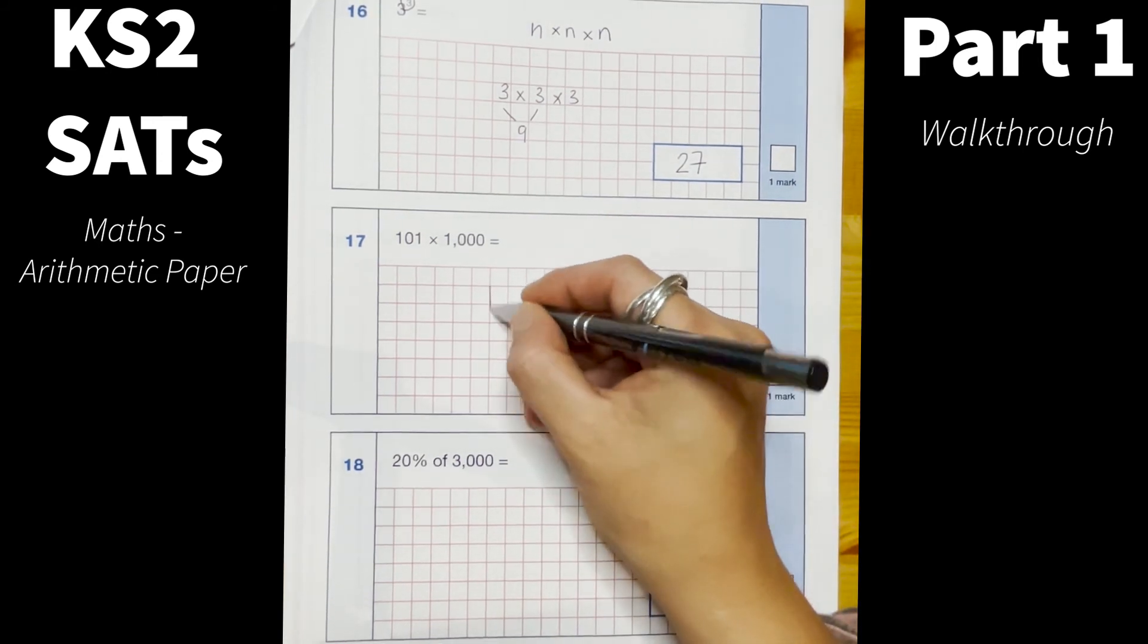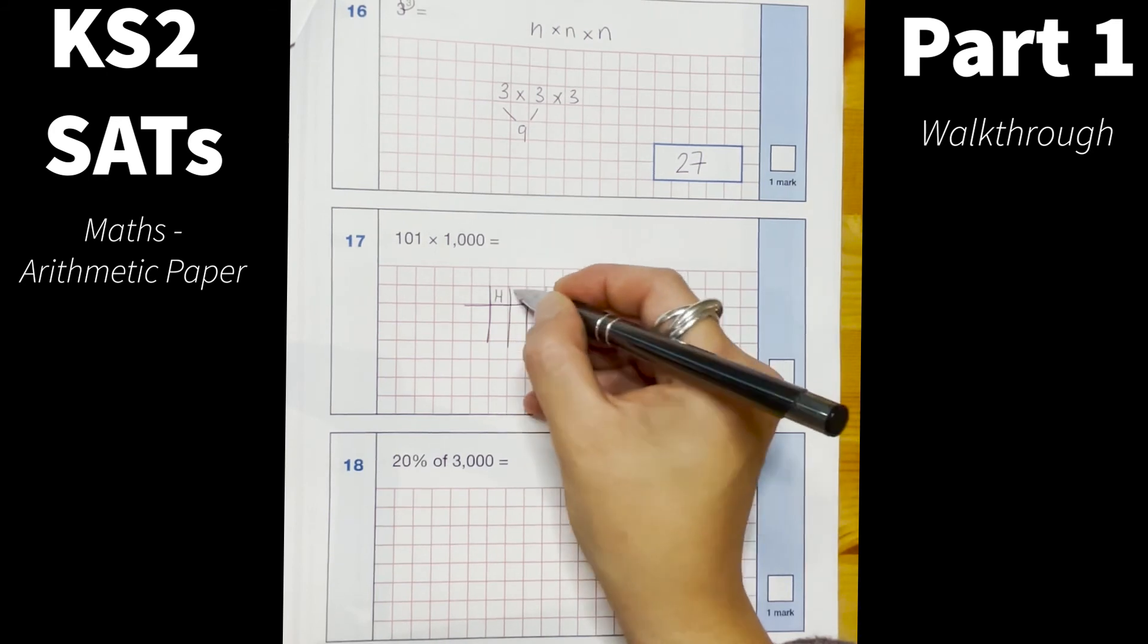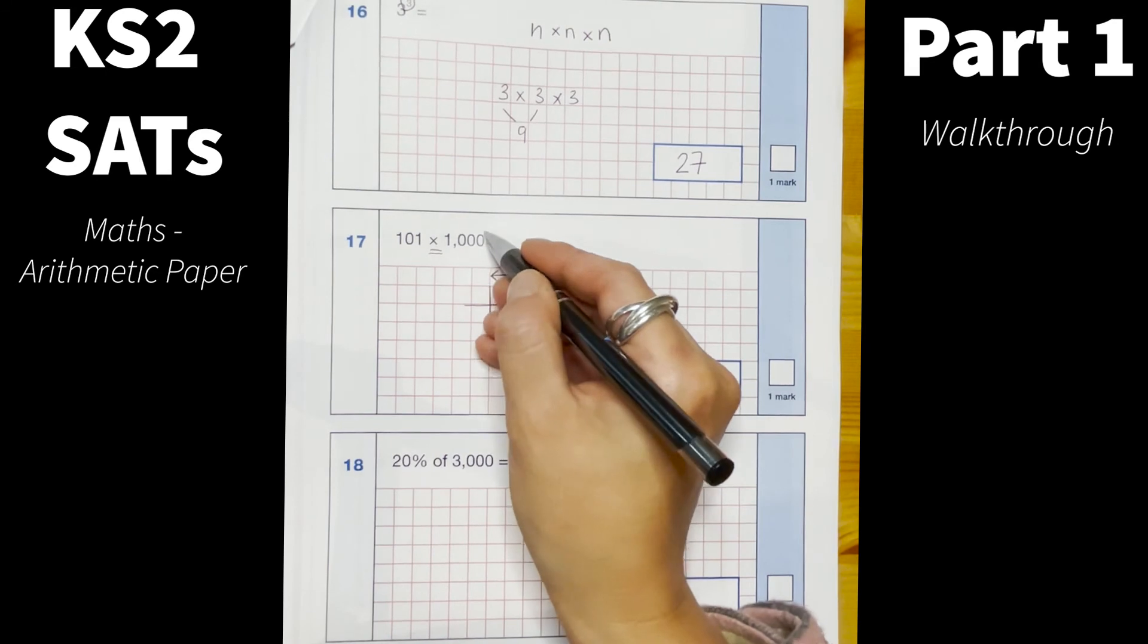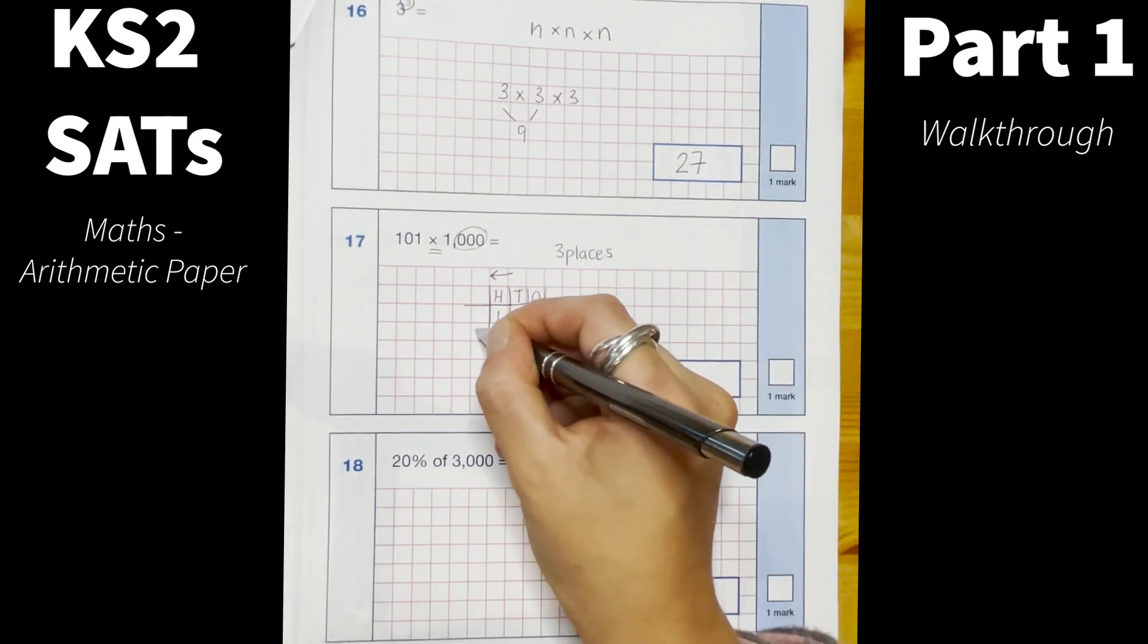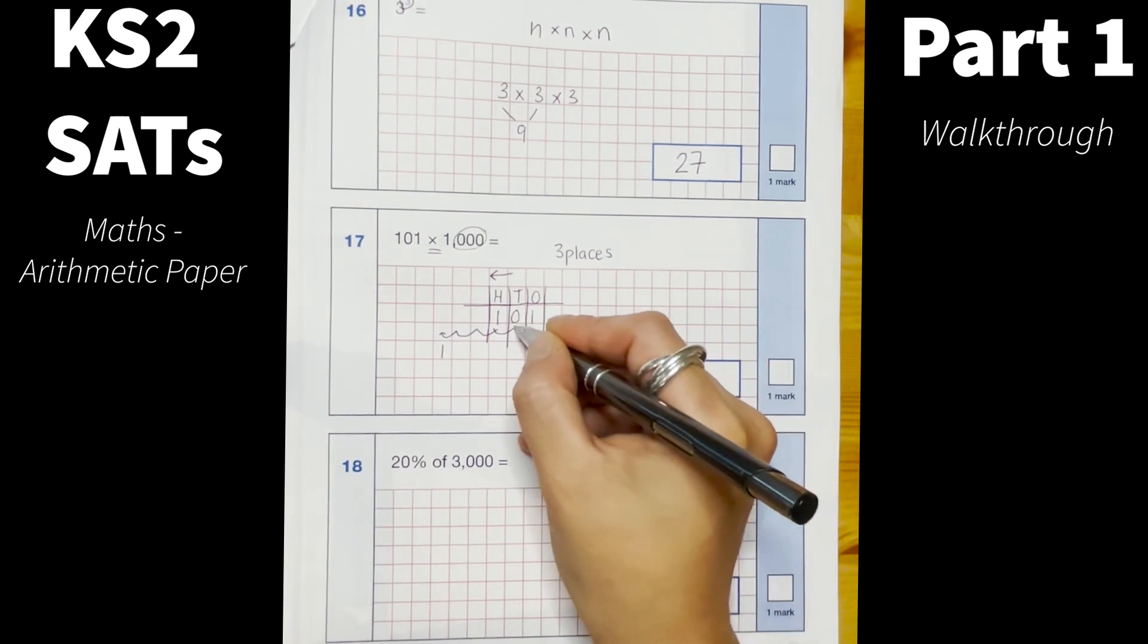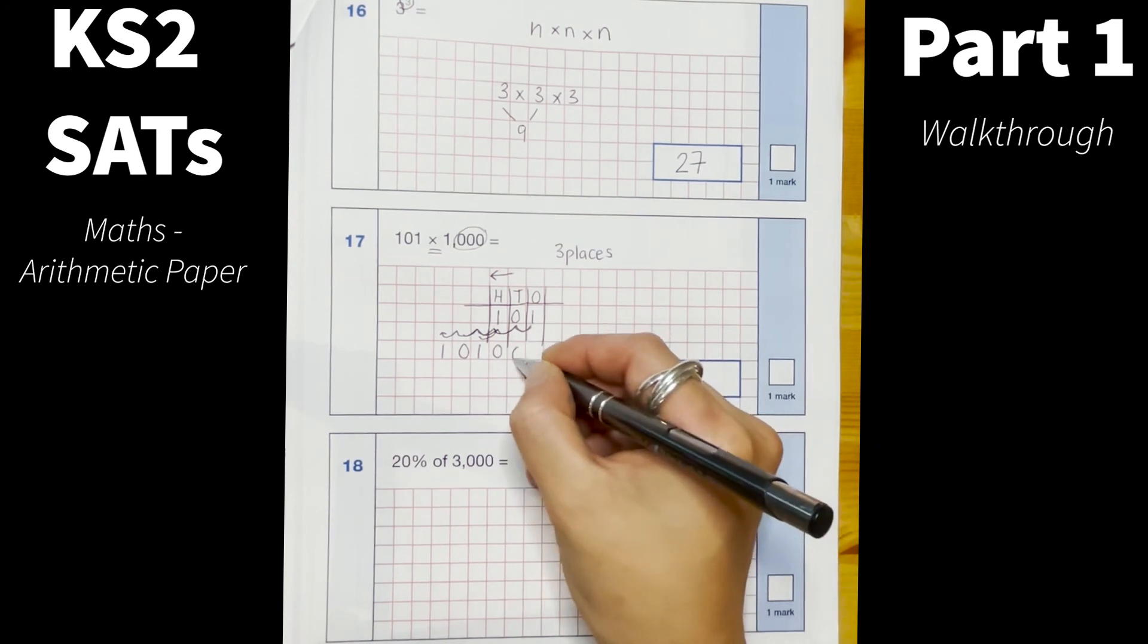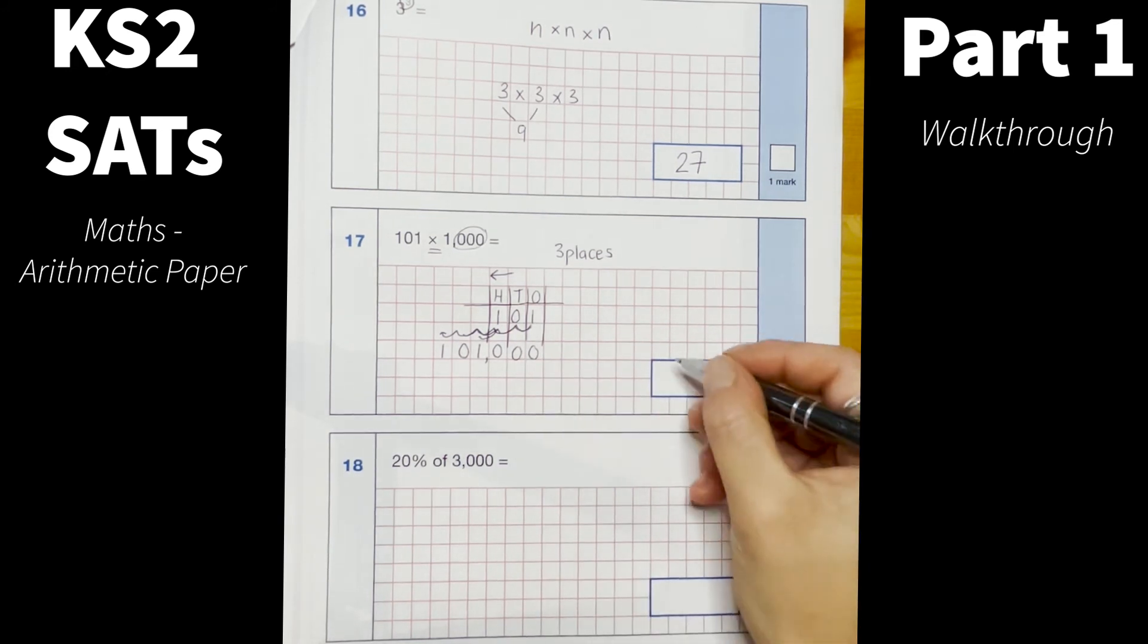And the next, 101 times 1000. Again I can draw my place value grid so I know that I have my hundreds, tens, ones and I know that I've got 101 and I'm timesing my number so my digits are going to move to the left. And I'm timesing by a thousand so they're going to move three places to the left. So one, two, three, and one, two, three. And then I need to fill in my zeros as placeholders, one, two, three, so I know that I am working with 101,000.